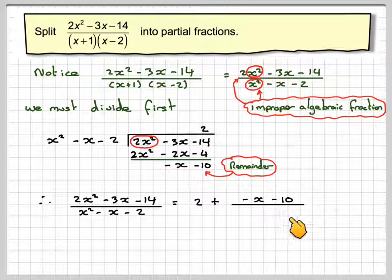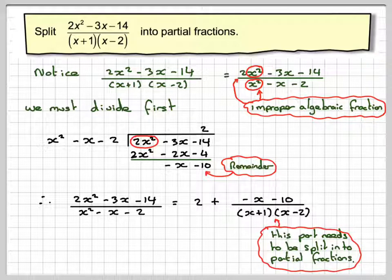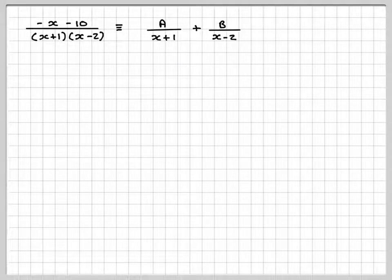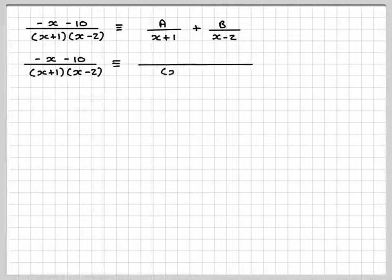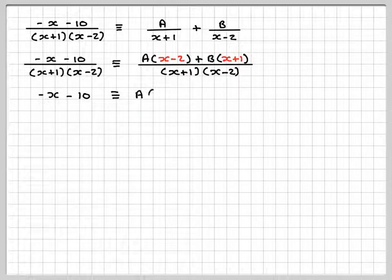The remainder is minus x minus 10, over the denominator factorised as x plus 1 times x minus 2. We split this remainder part into partial fractions and put the 2 back in at the end. This is a simple case with two linear factors, so we write: minus x minus 10 over x plus 1 times x minus 2 equals A over x plus 1 plus B over x minus 2. With a common denominator of x plus 1 times x minus 2, A is multiplied by x minus 2 and B is multiplied by x plus 1. Therefore, minus x minus 10 equals A times x minus 2, plus B times x plus 1.